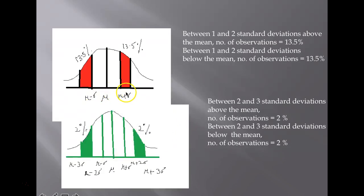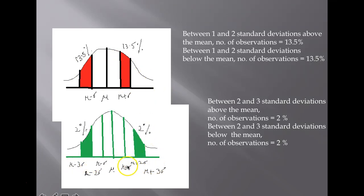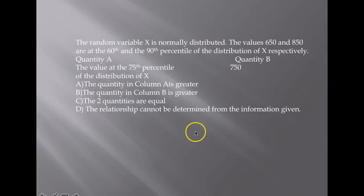Between one and two standard deviations above the mean, the number of observations is 13.5%. Similarly, between one and two standard deviations below the mean — that is, between mu-minus-2sigma to mu-minus-sigma and mu-plus-sigma to mu-plus-2sigma — observations are 13.5%. Between two and three standard deviations from the mean, on either side, the number of observations is 2%.